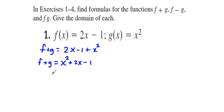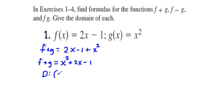And what is its domain? Well, this is a polynomial function. We can look at the domain of the initial two functions: f of x equals 2x minus 1 is a polynomial with no limitations, and g of x equals x squared likewise. So our domain is going to be all real numbers, which in interval notation is negative infinity to infinity.